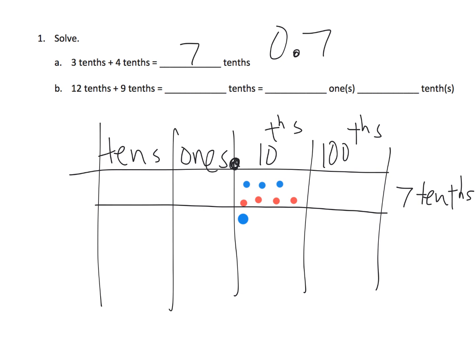Well, 12 tenths looks like this. It's going to look like 1, 2, 3, 4, 5, 6, 7, 8, 9, 10, 11, 12. So there's our 12 tenths.